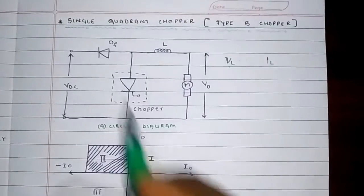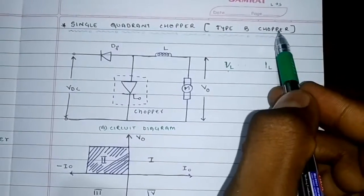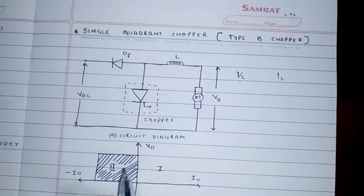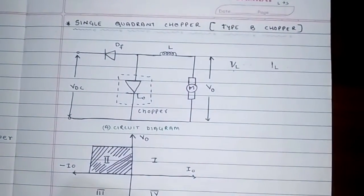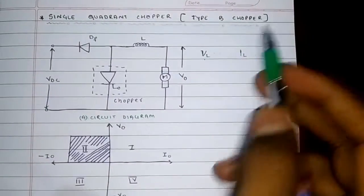In this video, I am going to explain single quadrant chopper, specifically Type B chopper. This Type B chopper is also called second quadrant chopper. Here I have the circuit of Type B chopper.